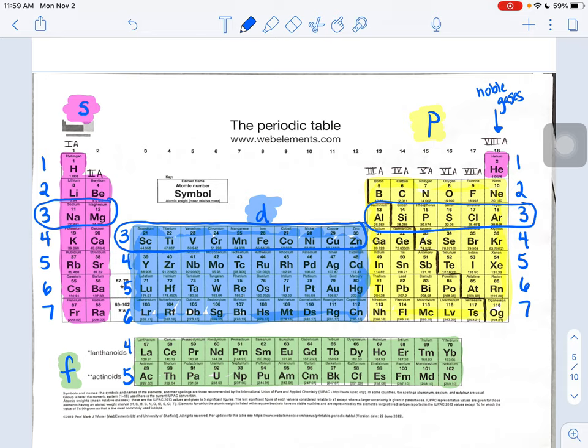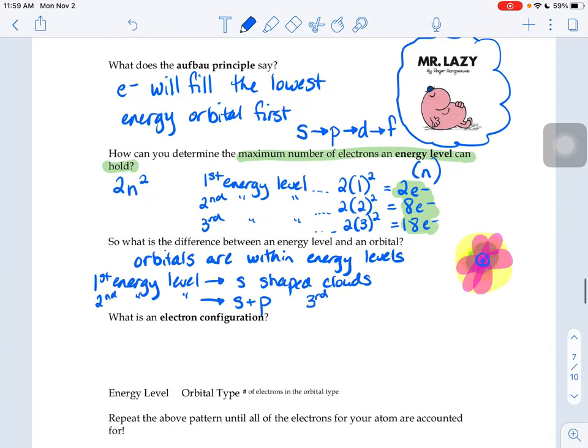Well, two of those 18 could fit in S-shaped clouds. Six of those 18 could fit in P-shaped clouds, and 10 of them could fit in D-shaped clouds. So we have S, P, and D in our third energy level.